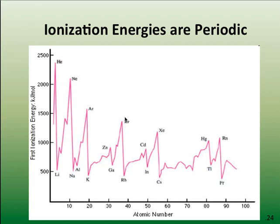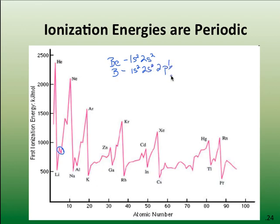Ionization energies are periodic — you can see a trend as we go across. One discrepancy to note is between beryllium and boron. Beryllium is 1s², 2s², and boron is 1s², 2s², 2p¹. That one electron in the outermost p sublevel is easier to remove than the relatively stable two electrons in a fully filled s sublevel.